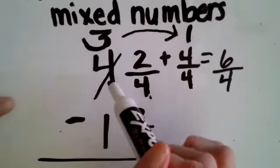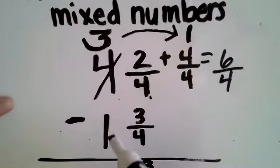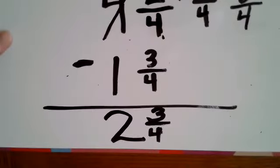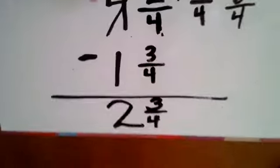Now remember I don't have four anymore out of three. So three subtract one is two. Two and three fourths.